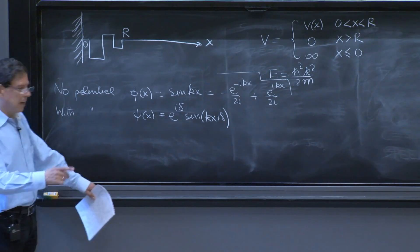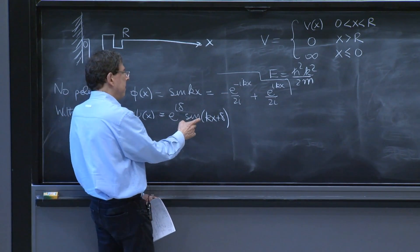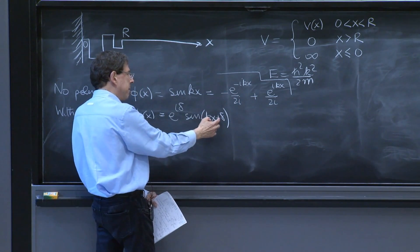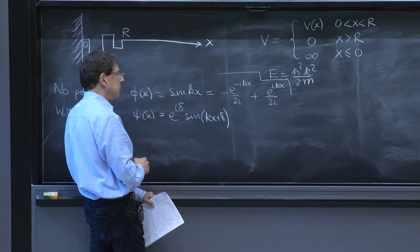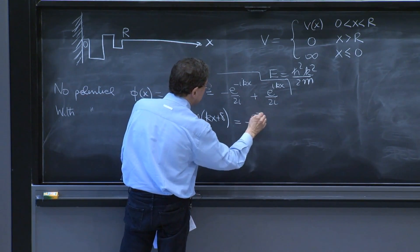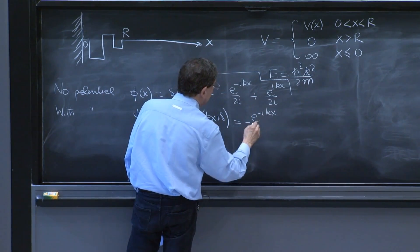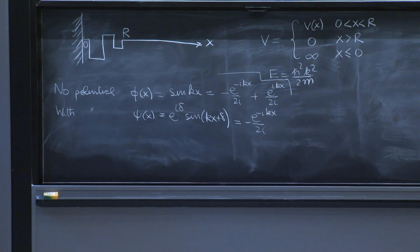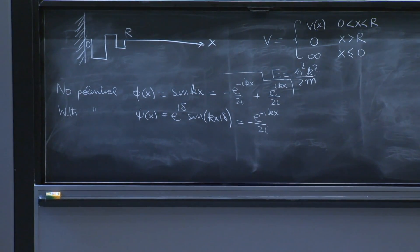And if you look at the part of the phase that has the minus ikx, would have a minus delta and a delta here. So they would cancel. So this solution has the same incoming wave as the no potential solution.